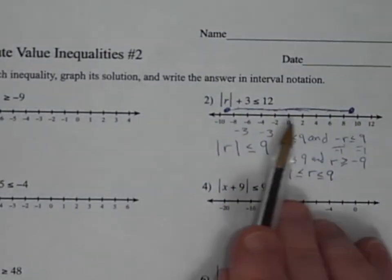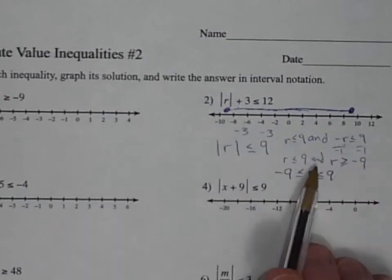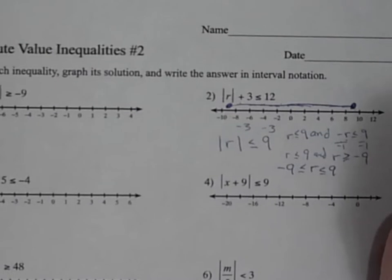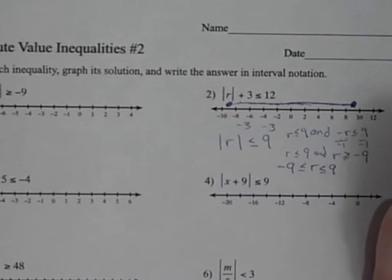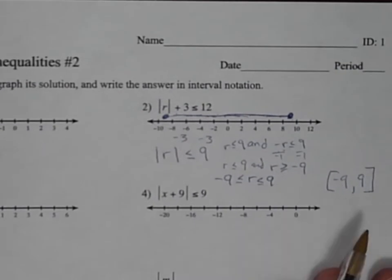Sometimes with 'and' you see them written where r is just written once, with the inequalities combined to negative 9. That makes it easier to write in interval notation. So everything between 9 and negative 9, and with the equal to it's going to be filled-in circles. Negative 9 to 9 — that is the solution set.